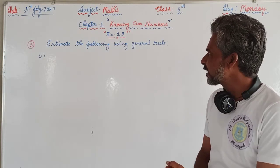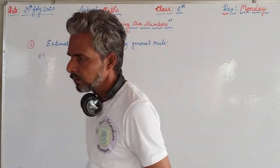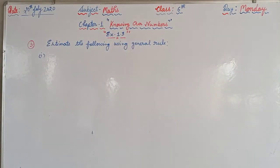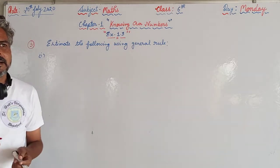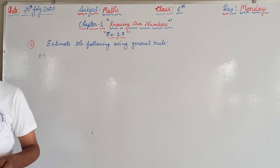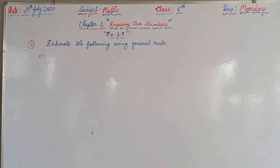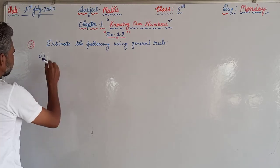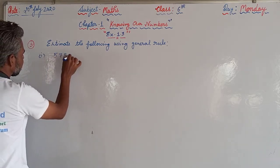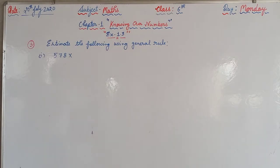In Question Number 3, we have to estimate the following using the general rule. We have to multiply and find the product by the method of estimation. The first part is 578 × 161.